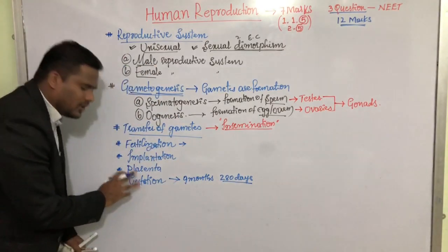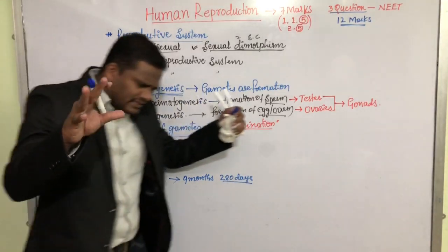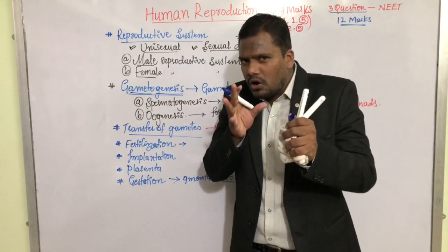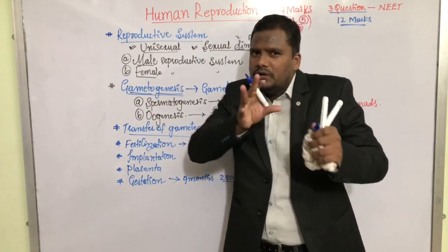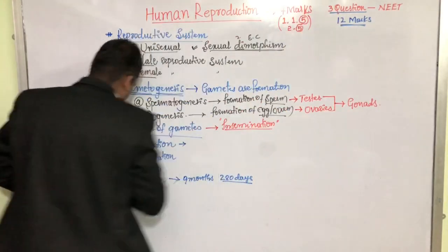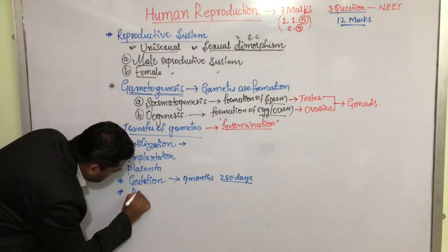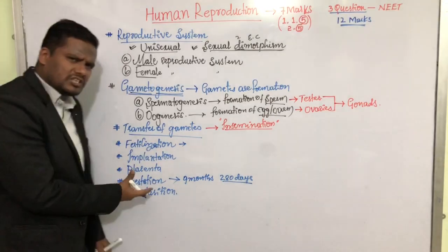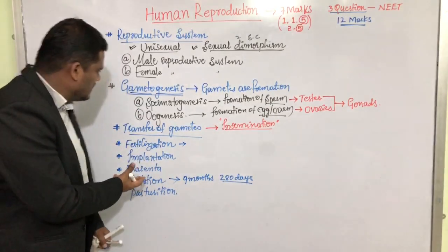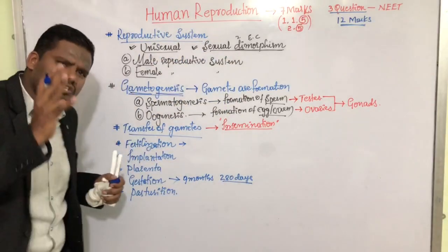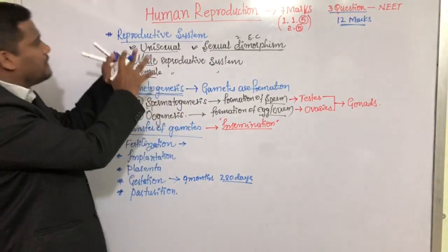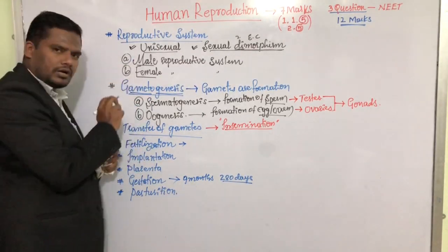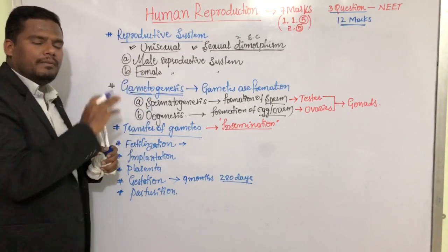After completing the gestation period, the mother wants to expel the baby out — that process is technically called parturition. Parturition is the delivery process. We are going to study all these very interesting concepts in this particular chapter. From the next video, we are going to study about the male reproductive system, then the female reproductive system.